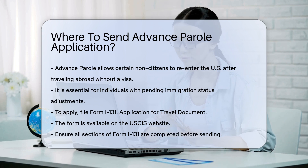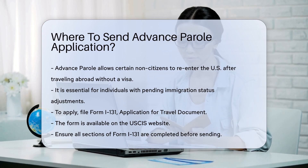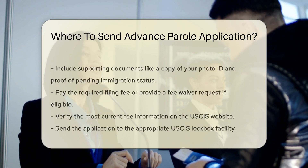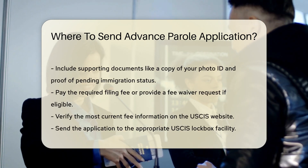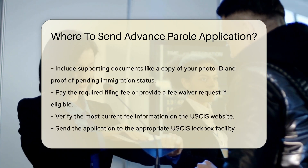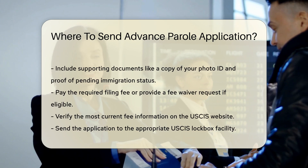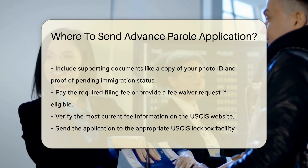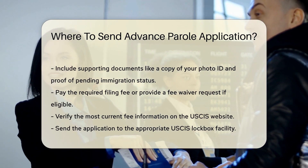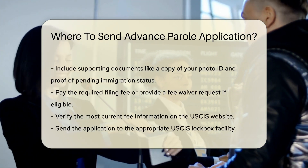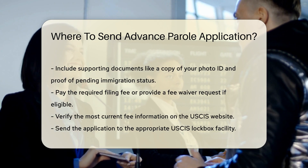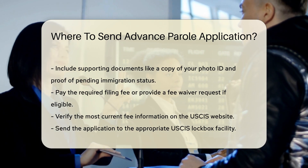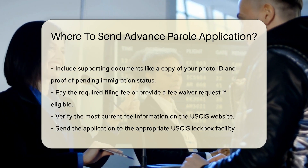Before sending your application, ensure you have completed all required sections of Form I-131. Include supporting documents, such as a copy of your photo ID and proof of your pending immigration status. You must also pay the required filing fee or provide a fee waiver request if eligible.